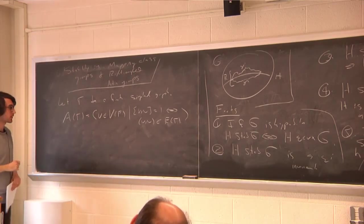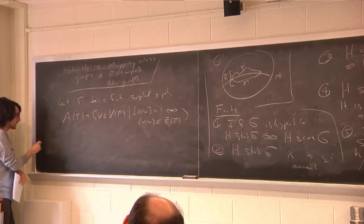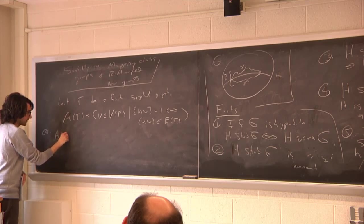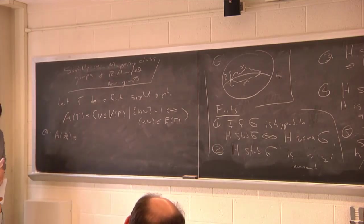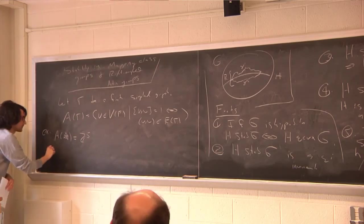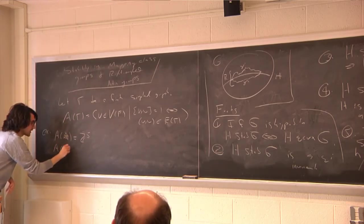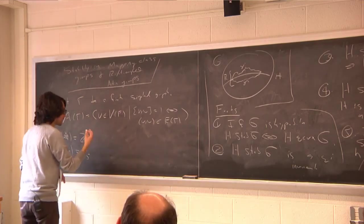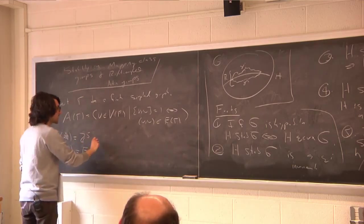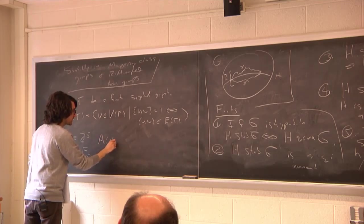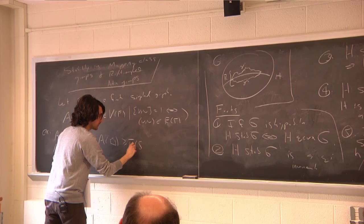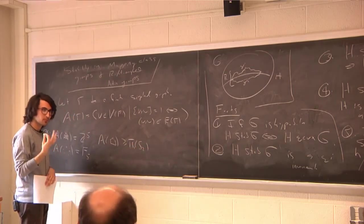Let Γ be a finite simplicial graph. The right-angle Artin group A(Γ) has the following presentation: a generator for each vertex of Γ, and a relator saying two generators commute if and only if the corresponding vertices form an edge. Three examples: the complete graph on five vertices gives the free abelian group of rank five; five disjoint vertices give the free group of rank five; the pentagon graph contains a closed surface group of genus two — a more complex structure, first observed by Crisp and Wiest.